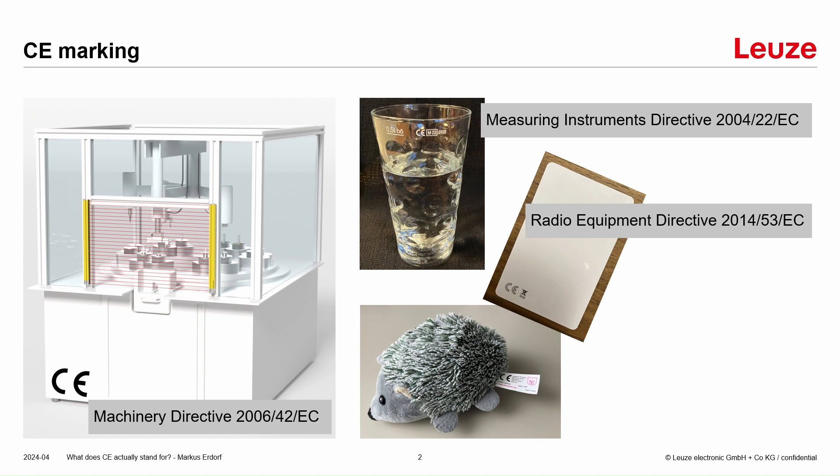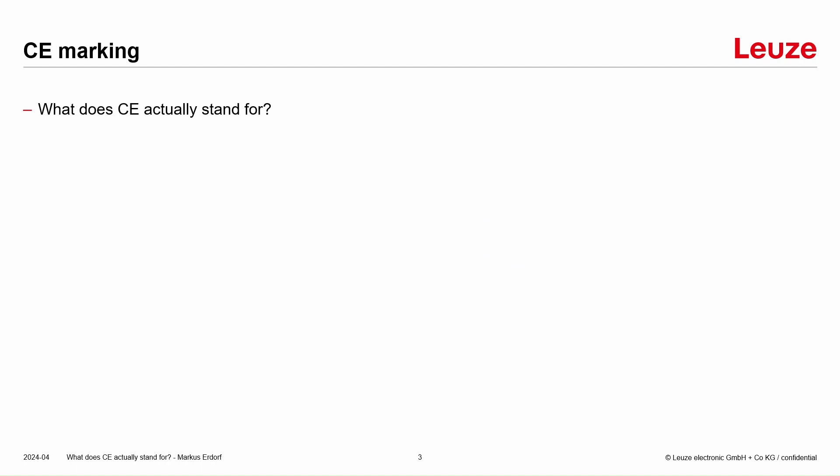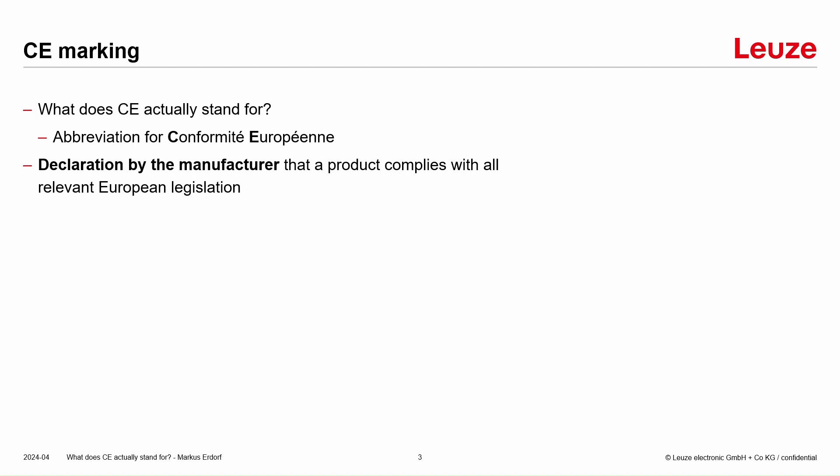We also have the safety of toys directive. What do the letters C and E mean? They come from the French language — the abbreviation is 'Conformité Européenne' — and in the end it's a declaration by the manufacturer that a product complies with all relevant European legislation or directives.